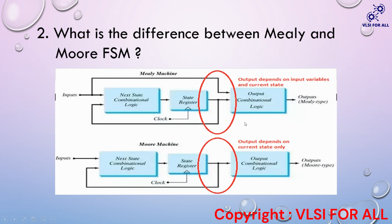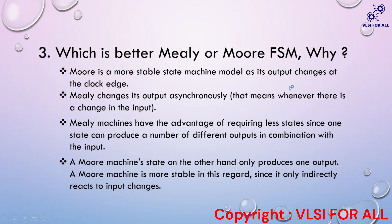The next question is: which is better — Mealy or Moore FSM, and why? Moore is a more stable state machine model as its output changes only when the clock edge arrives, whereas Mealy changes its output asynchronously — whenever there is a change in the input we get a change in the output, which may cause difficulties. Mealy machines have the advantage of requiring fewer states, since one state can produce a number of different outputs in combination with the input. Moore, on the other hand, only produces one output per state, making it more stable.